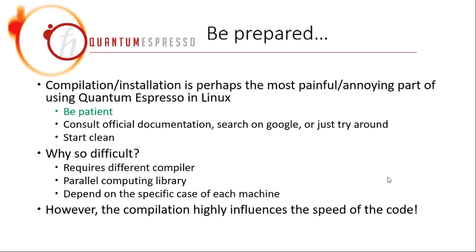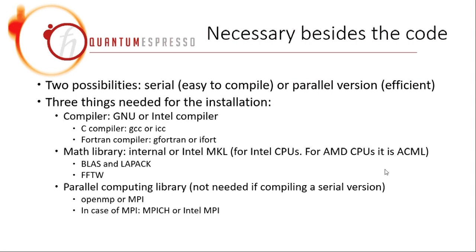Although the compilation is quite annoying and difficult, it is actually extremely important because it highly influences the speed of the code, as we will see later. To compile Quantum Espresso, there are two possibilities: one is the serial version and one is the parallel version. The serial version means Quantum Espresso runs on only one core of your CPU. For the parallel version, it distributes the job to different cores, which highly increases the efficiency.